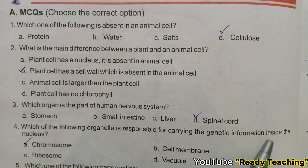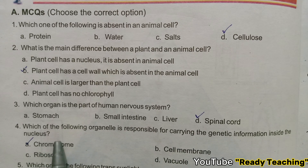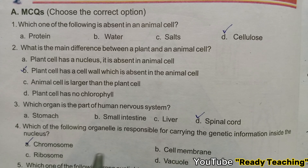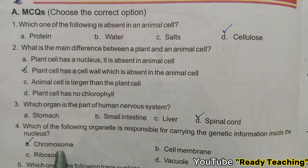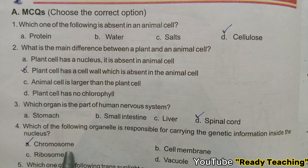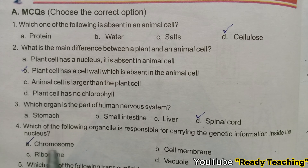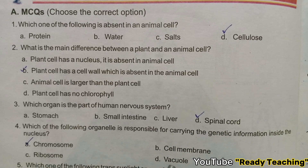Next question: Which organelle is responsible for carrying genetic information inside the nucleus? The answer is chromosomes — inside them you find DNA and genes, which carry all genetic information. Other options like cell membrane and ribosomes are not correct for this.